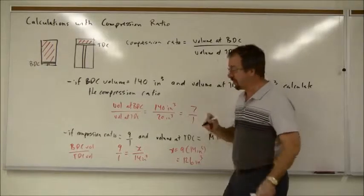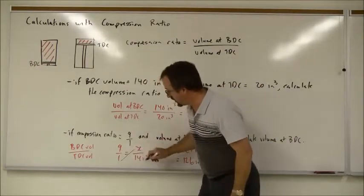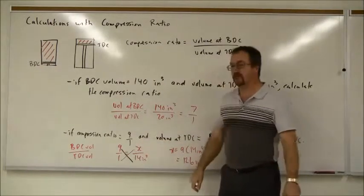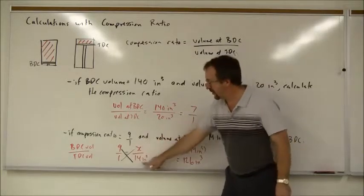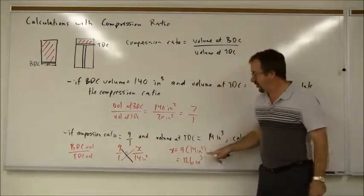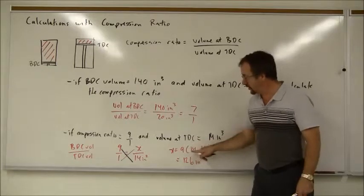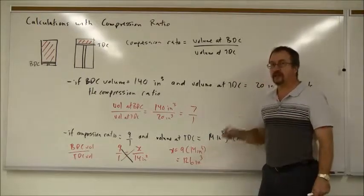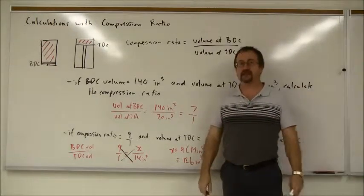Then to solve, as we do with ratios, multiply this way, multiply that way, cross-multiply. So X equals 9 times 14 cubic inches. So X, 9 times 14 is 126, it's 126 cubic inches at bottom dead center.